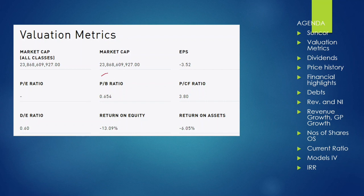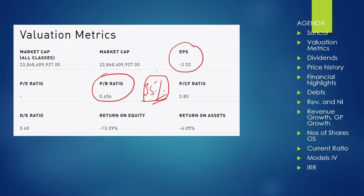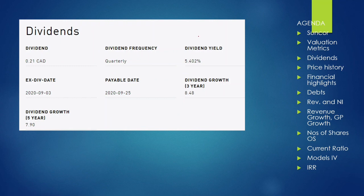As you can see on the valuation matrix, this ticker is on a very huge discount — around 35%. Right now the company is having a loss, as the EPS is negative. One reason is that this is an energy pipeline company and the government put restrictions in Alberta, which were recently lifted, so no need to worry from that perspective.